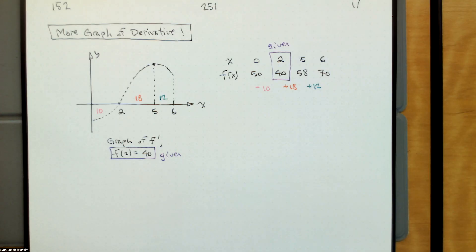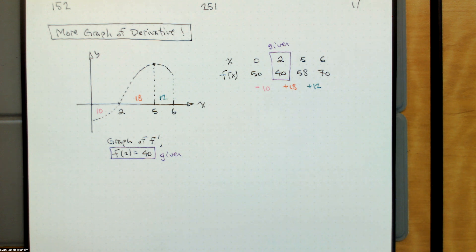If you recall, last time we talked about what we can read from the graph of the derivative. Yesterday we focused on the sign of the derivative telling us about the direction of the function.